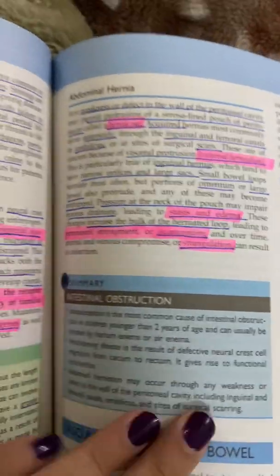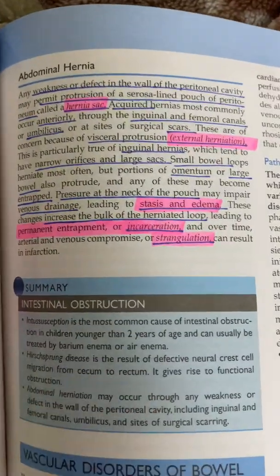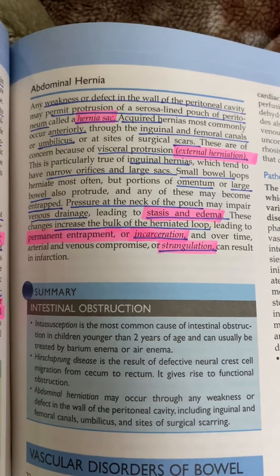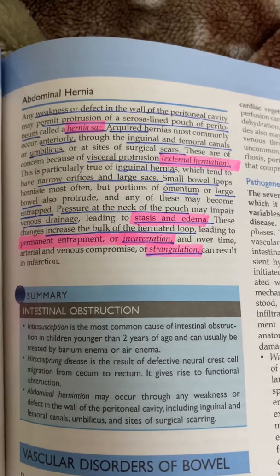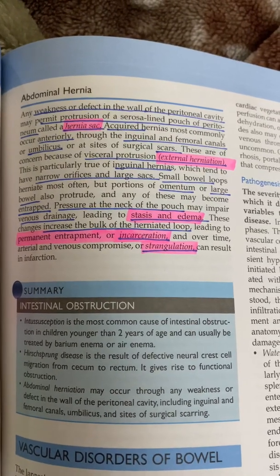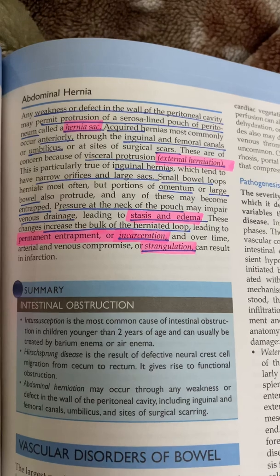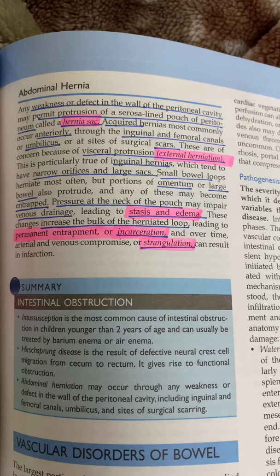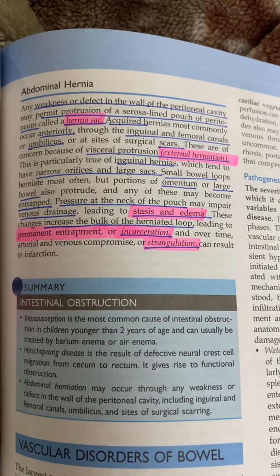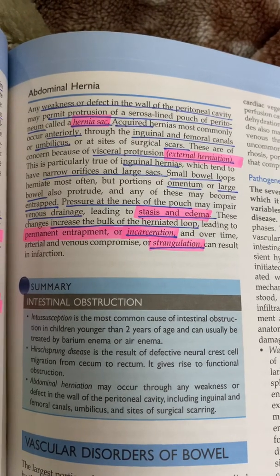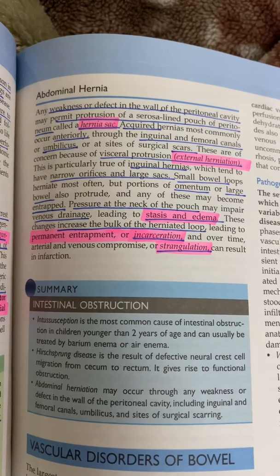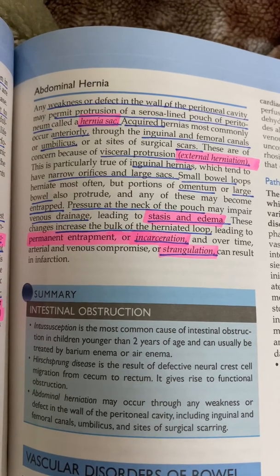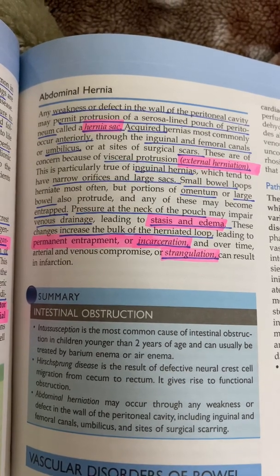The last topic on intestinal obstruction is abdominal hernias, which mostly occur in the inguinal area, femoral canal, or umbilical area. There will be a hernial sac with protrusions of bowel, mostly small intestine loops or omentum, though large bowel may also protrude. The neck of the sac is constricted, and if there is pressure at the neck of the pouch, there may be impaired venous drainage, leading to stasis and edema.